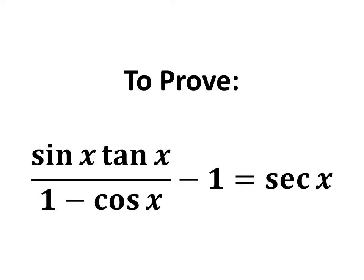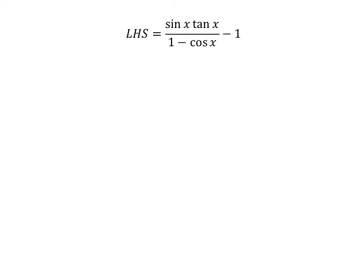In this video, we will learn to prove the trigonometry identity: sine of x times tangent of x upon 1 minus cosine of x, minus 1, is equal to secant of x. Let us start from the left hand side of the identity. The left hand side is equal to sine of x times tangent of x upon 1 minus cosine of x, minus 1.